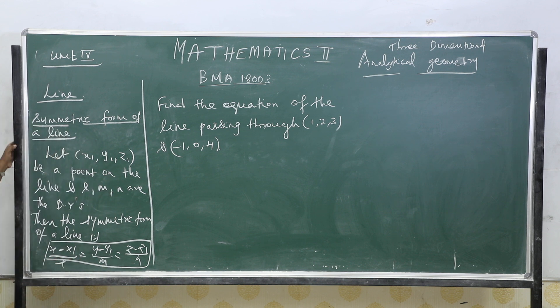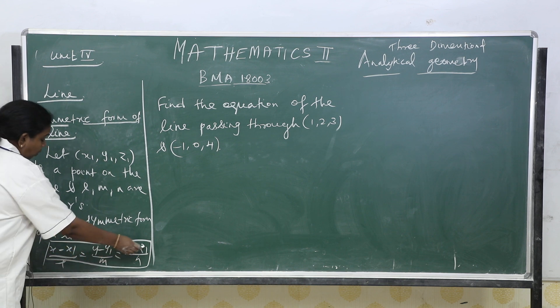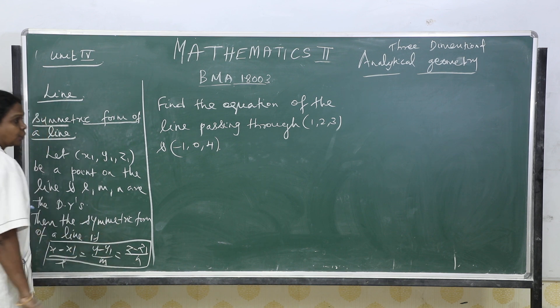Once again I will repeat. I am taking a point x1, y1, z1 on a line, and l, m, n are the direction ratios. Then the symmetric form of a line is x minus x1 by l equals y minus y1 by m equals z minus z1 by n. This is the point on the line and these are the direction ratios of the line.